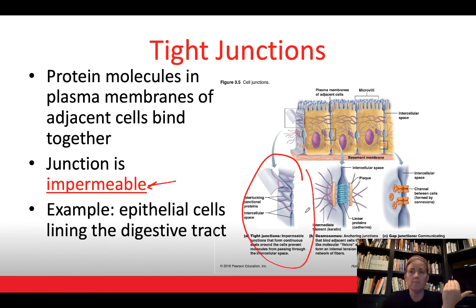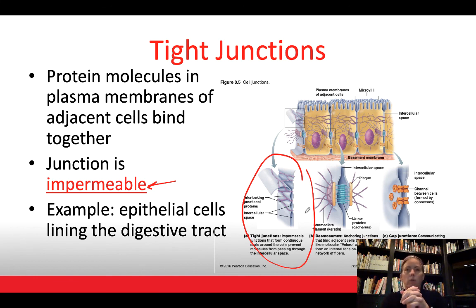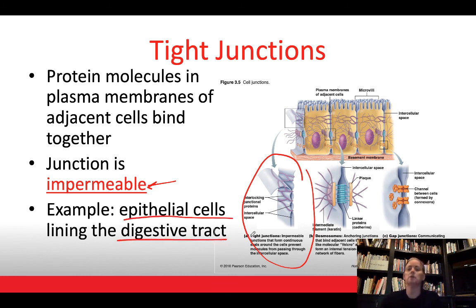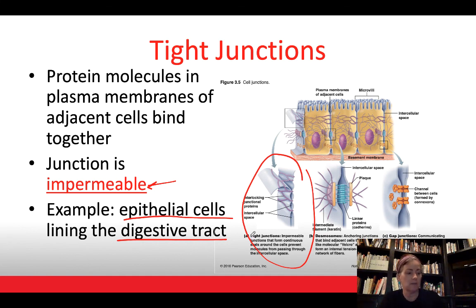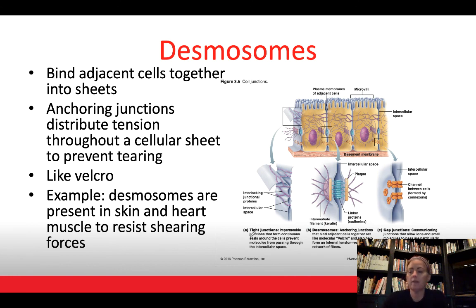Tight junctions form a very tight connection between adjacent cells and are found in areas where we want impermeable junctions for control. An example is the epithelial cells lining the digestive tract — this allows us to control what enters our body, permitting nutrients through while preventing pathogens or bacteria from gaining access.